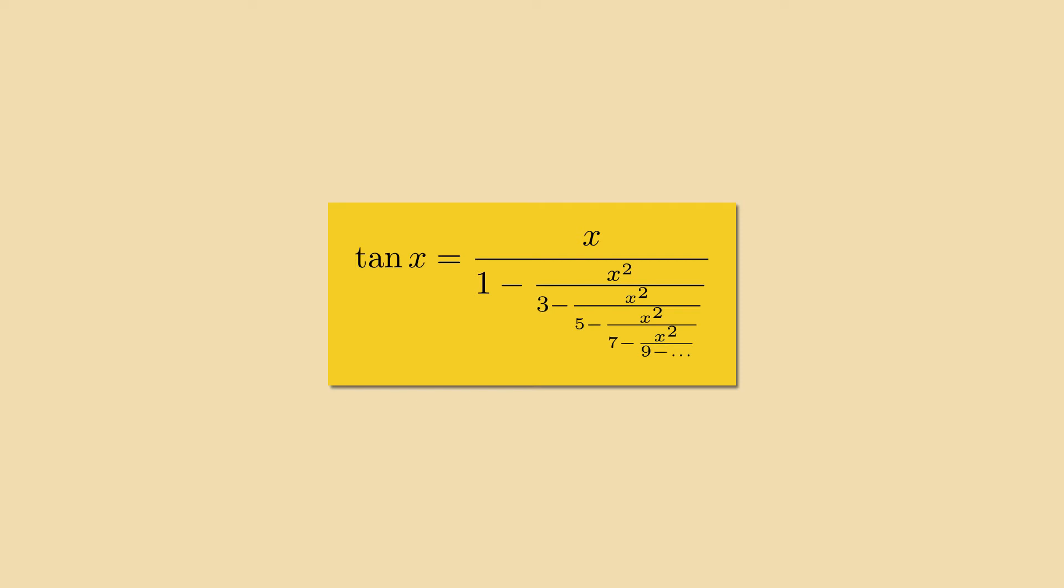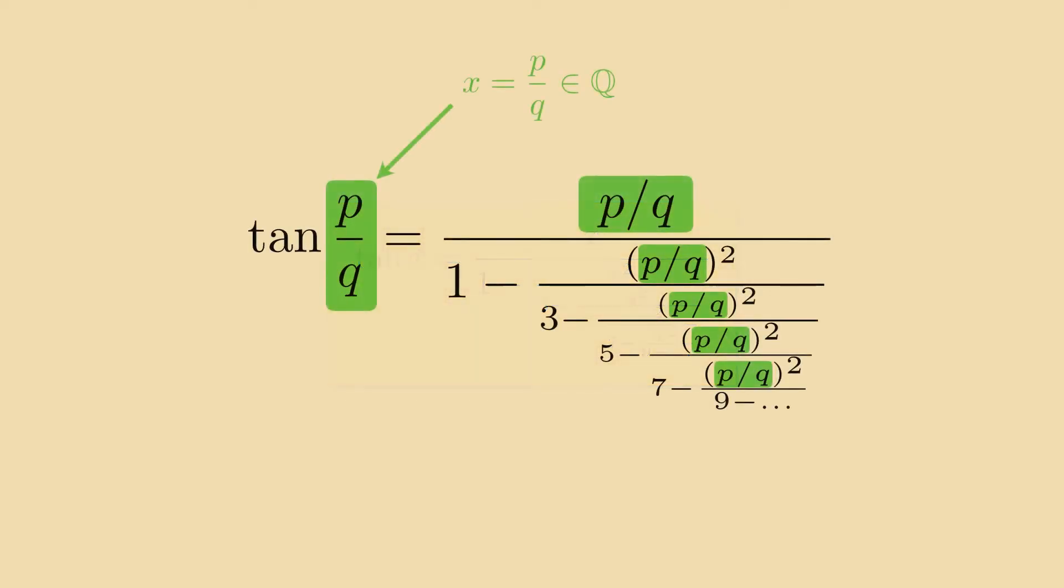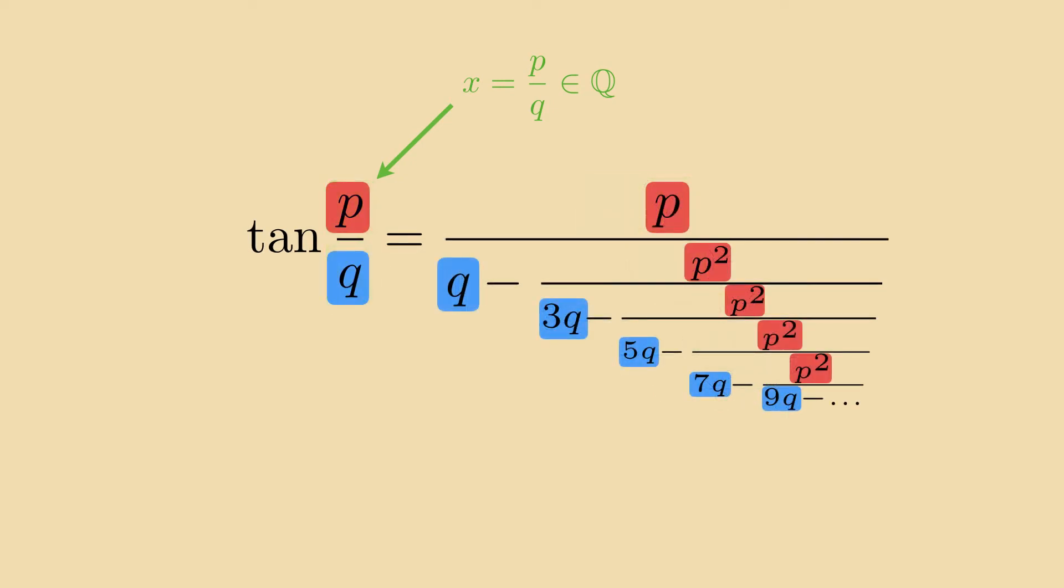But let's be a bit more general and set x to be a rational number p over q, where now p and q are integers. We can get rid of the double fractions by expanding with q squared, which gives us this continued fraction.